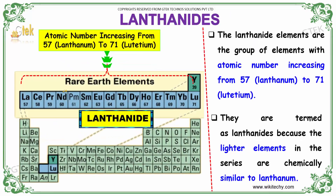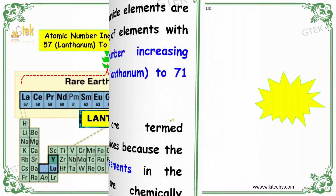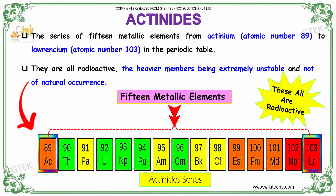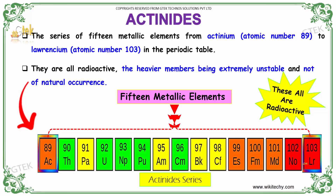The lanthanide elements are the group of elements with atomic numbers increasing from 57 to 71. They are termed as lanthanides because the lighter elements in the series are chemically similar to lanthanum. The actinides are a series of 15 metallic elements from actinium to lawrencium.